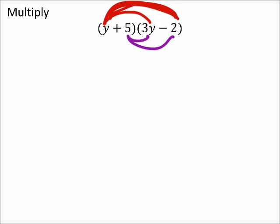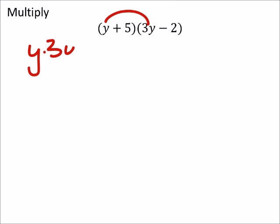Let me start that over. All right, so the first rainbow would be this one, y times 3y, which really is just 3 times y times y, which is 3y squared.